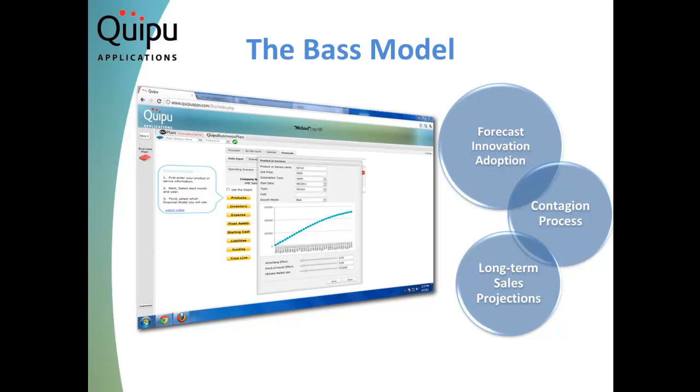A key feature of the model is that it embeds a contagion process to characterize the spread of word of mouth between those who have adopted the innovation and those who have not yet adopted the innovation.